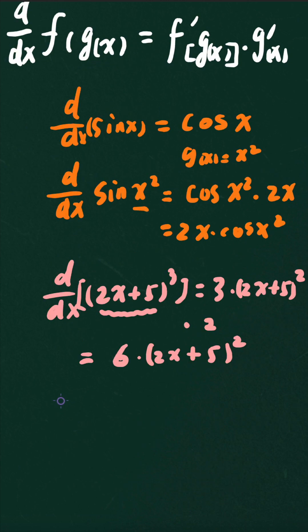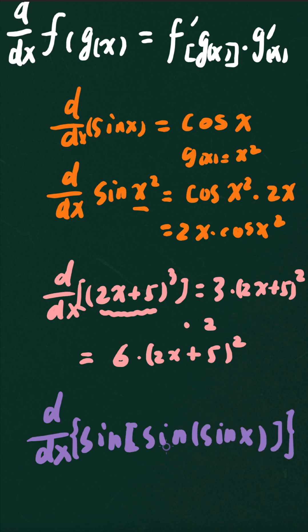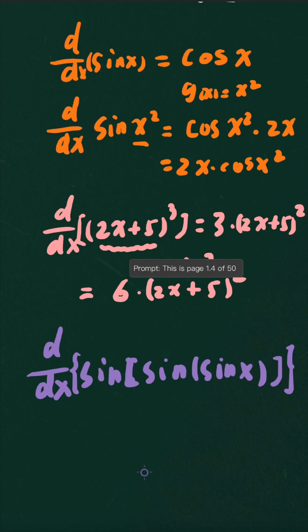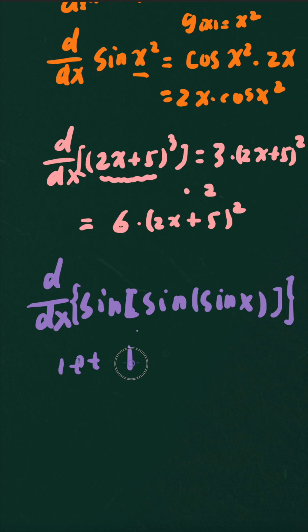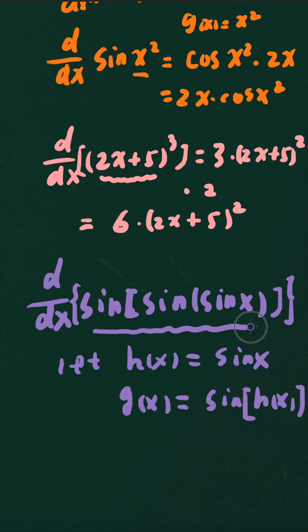Let's try to have a composite function with another layer inside another layer. What if you want to find the derivative of sine of sine of sine x inside it? All right. So we have another layer, but actually it doesn't matter. We're going to apply the rule one by one. Let's consider h(x) equals sine x and g(x) equals sine h(x). And the original function can be considered as sine g(x).